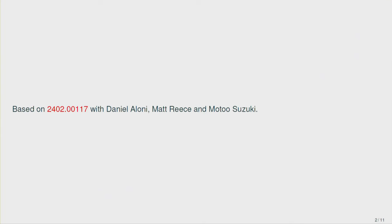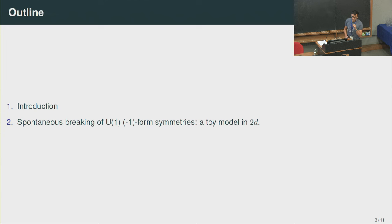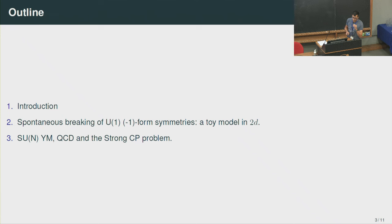This is based on a paper that appeared earlier in the year with Daniel Aloni, Matt Rees, and Moto Suzuki. I will start with an introduction, then give a toy example in two dimensions, and then graduate to four dimensions where I will very briefly talk about SU(N) Yang-Mills, QCD, and the strong CP problem.